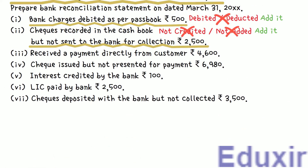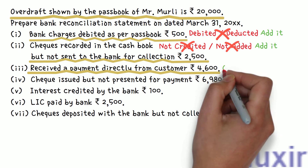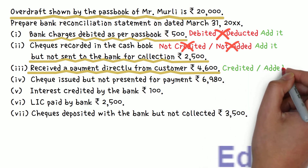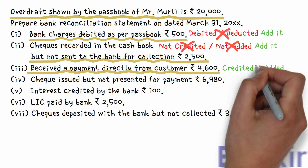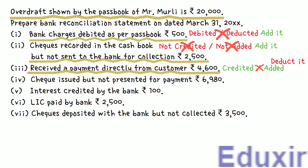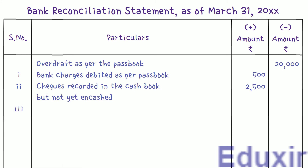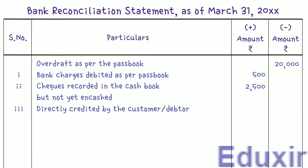Item 3: A payment is directly received from the customer. When customers directly deposit the amount in the bank, it will be credited in the bank passbook, but the business knows about these deposits only after the bank statement is received. So there is no corresponding entry in the cashbook. We need to deduct this amount from the passbook balance to get the cashbook balance. We write 'Directly credited by the customer or debtor' and enter 4,600 rupees in the minus amount column.